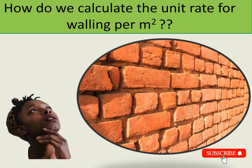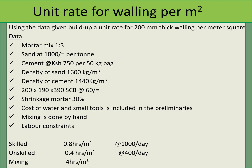Hey, awesome people, Naomi here. Welcome to this channel for another video. Today we shall be looking at calculating the unit rate of walling per meter squared. If you like this content, please subscribe and hit that notification bell so that whenever we pump content you can be updated. You will be given a sum like this: using the data given, build up a unit rate for 200 millimeters thick walling per meter squared.